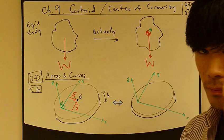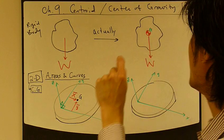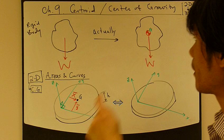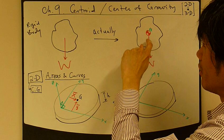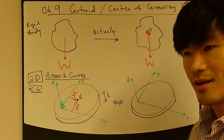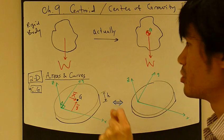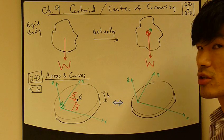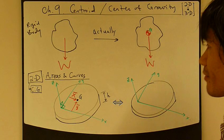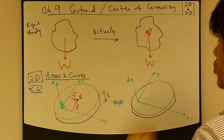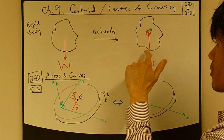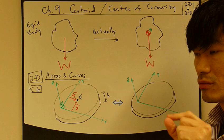Centroid or center of gravity is the location — I call it G — where you draw the weight vector, where this weight vector is applied. You have to be able to know the location of this weight vector precisely, because when you take a moment of all the forces acting on the rigid body about a certain point, this location becomes critical.